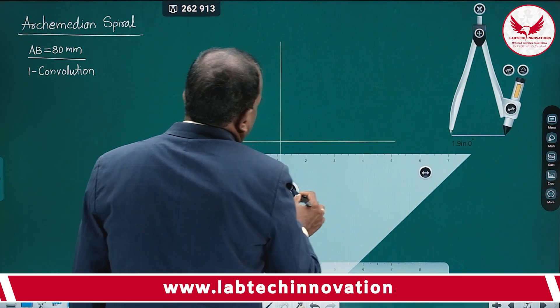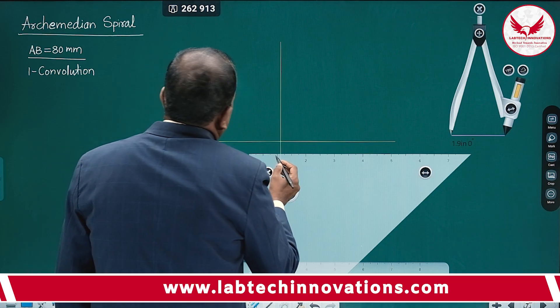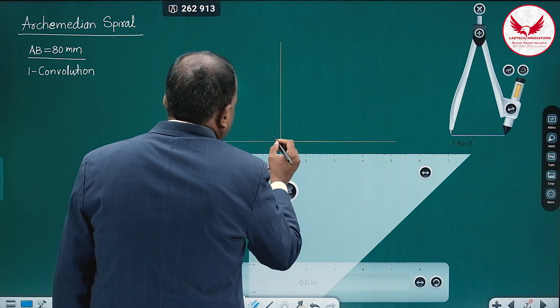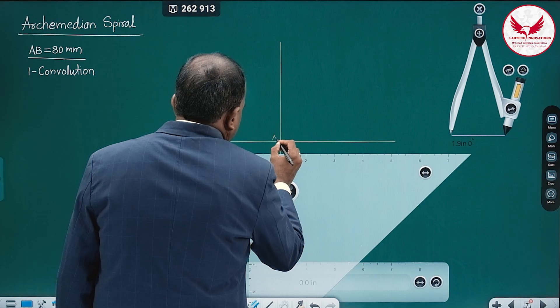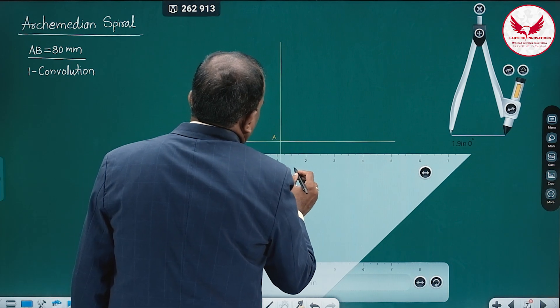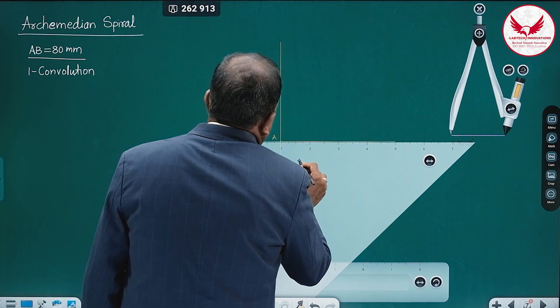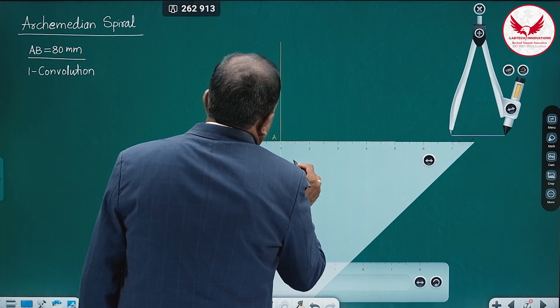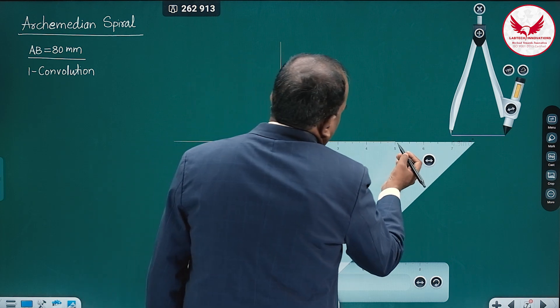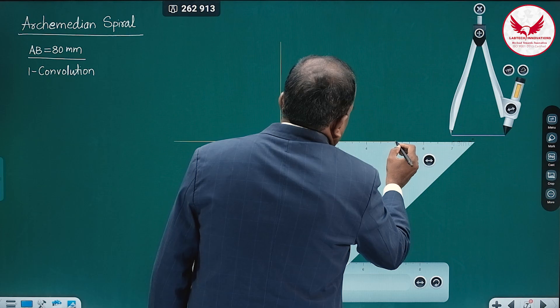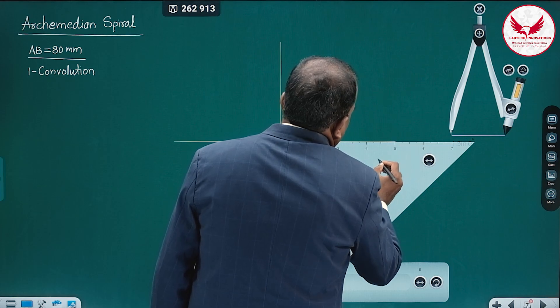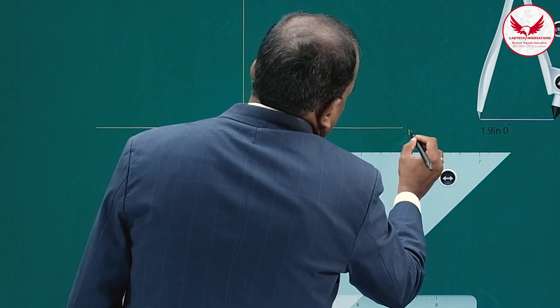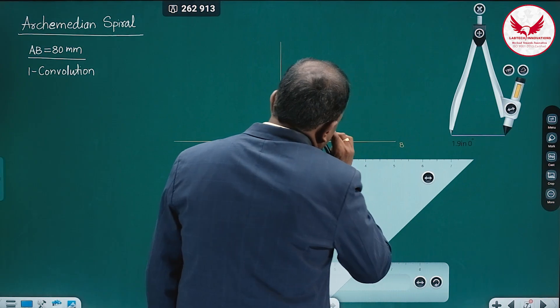And the intersecting point of this is going to be one end. So let us say it is A. Then from A, mark 80 mm. So 80 mm is going to be this point only. So this is going to be B. AB is 80 mm.